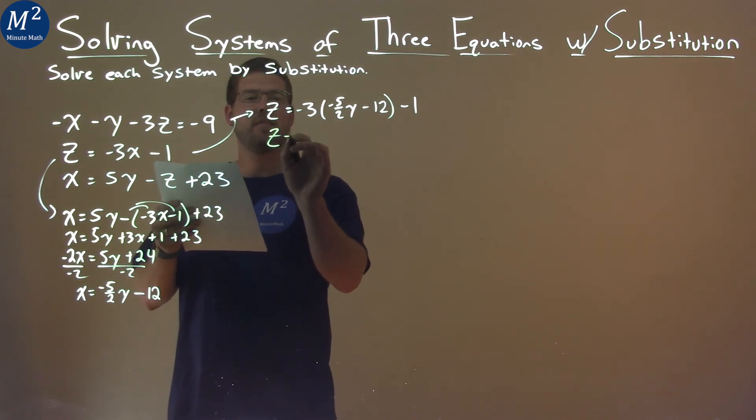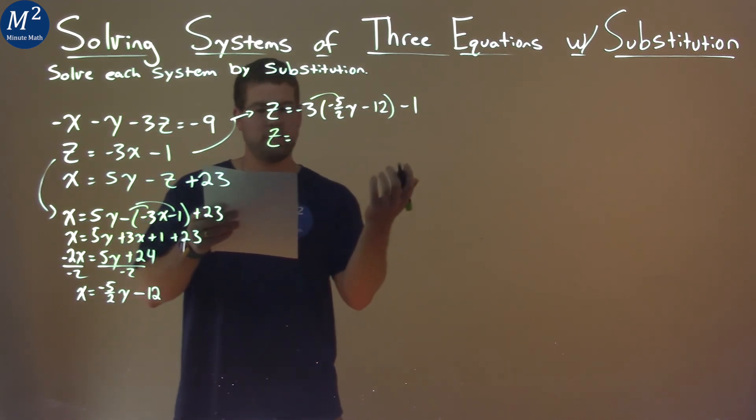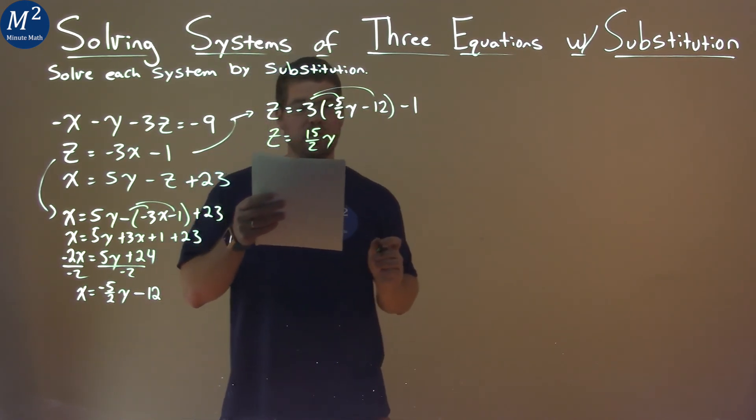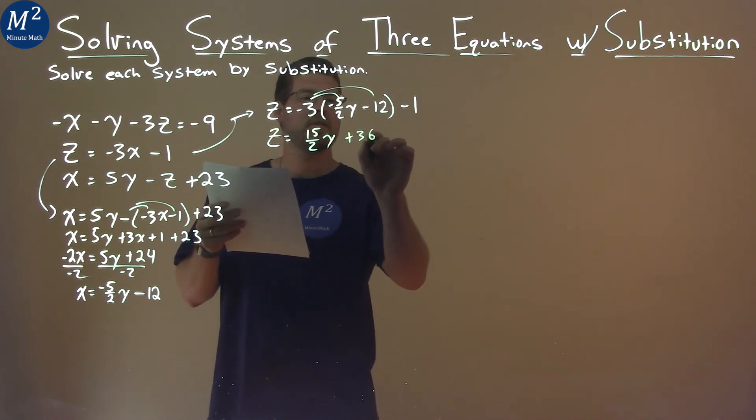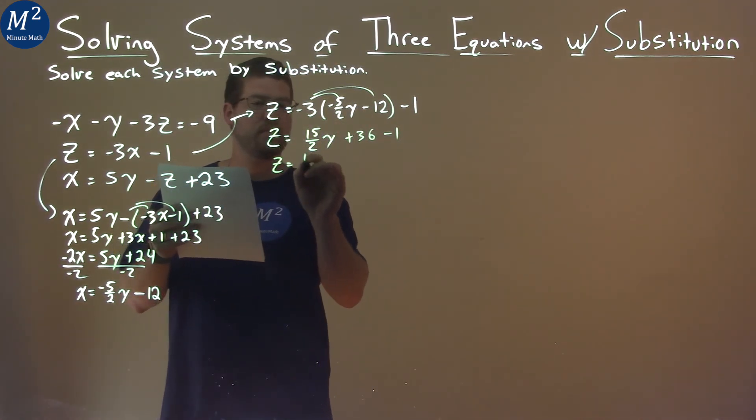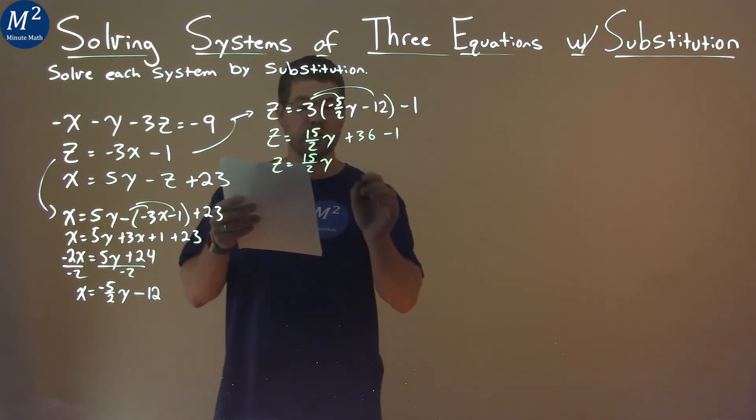Well, z is by itself again. Distribute the negative 3 to both parts. Negative 3 times negative 5 halves is positive 15 halves y. Negative 3 times negative 12 is positive 36, and we have minus 1. Simplify it a little bit: 15 halves y, and then 36 minus 1 is 35.